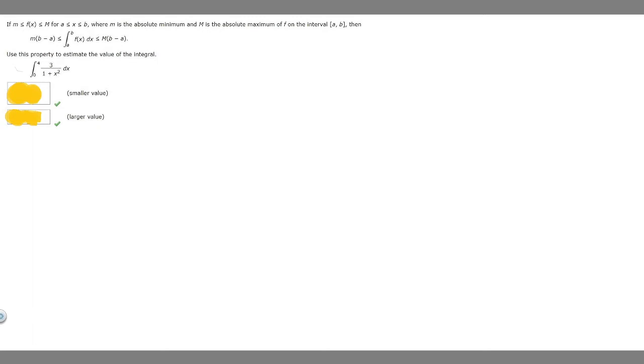We're told to use this property to estimate the value of the integral. So how do we do this? Basically what we're going to be solving for is lowercase m times b minus a and uppercase M times b minus a. Let's start by finding what b minus a is. So they tell us that this is going to be b and this is a. We have those two values, right? So it's basically the same thing.